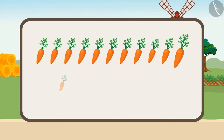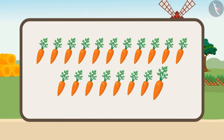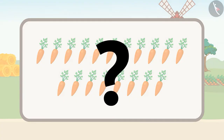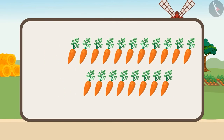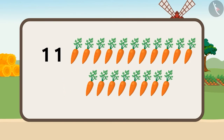Do you know how many carrots both Gaffee and Rani have collected? Let's find the total number of carrots using addition. Gaffee cut 11 carrots and Rani cut 8 carrots. How do we add 11 and 8? First of all, we will write it like this.